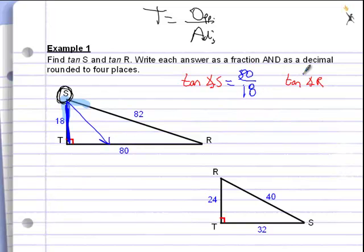80 over 18 is our ratio. We want to see if that will reduce. On my calculator, I'm going to punch in 80 divided by 18, then hit math, enter, and enter again. I see that that reduces to 40 over 9.